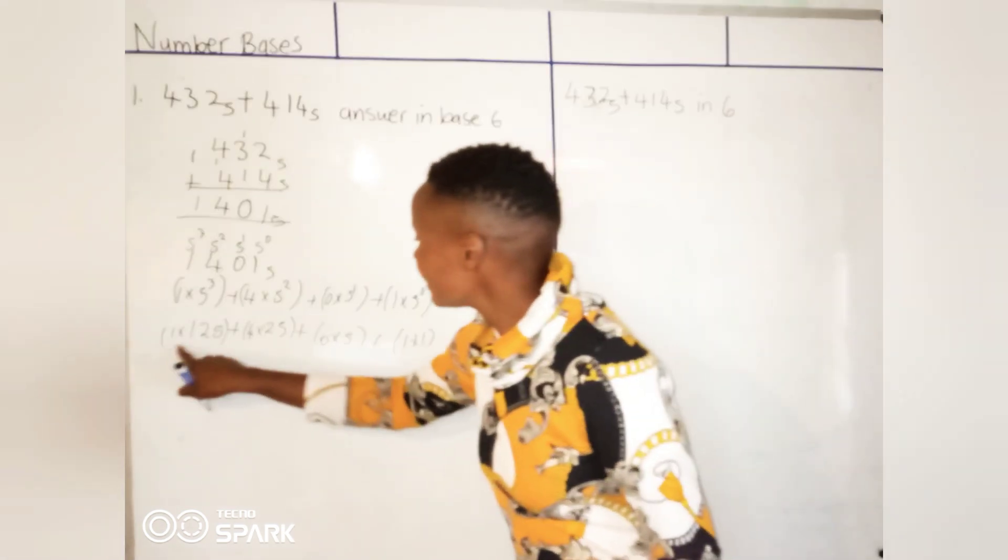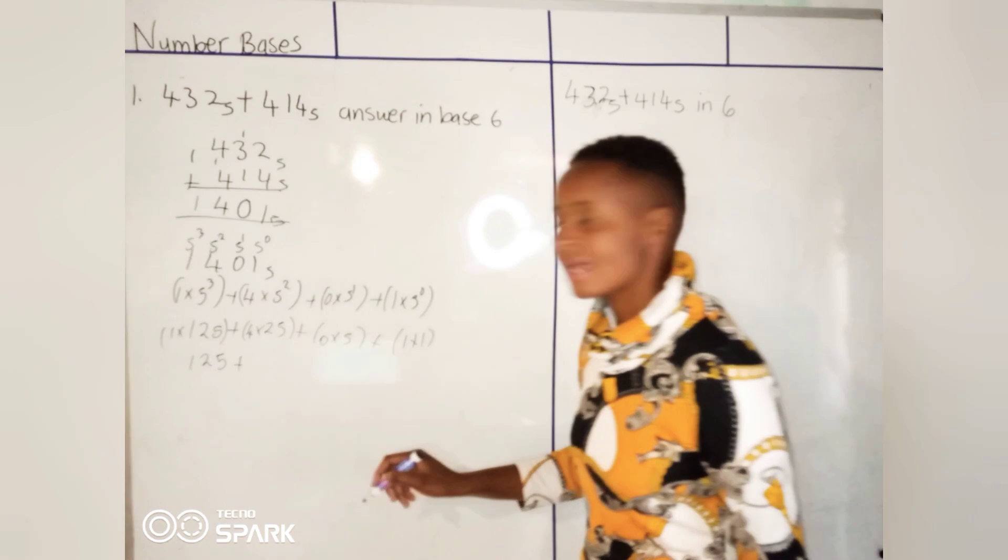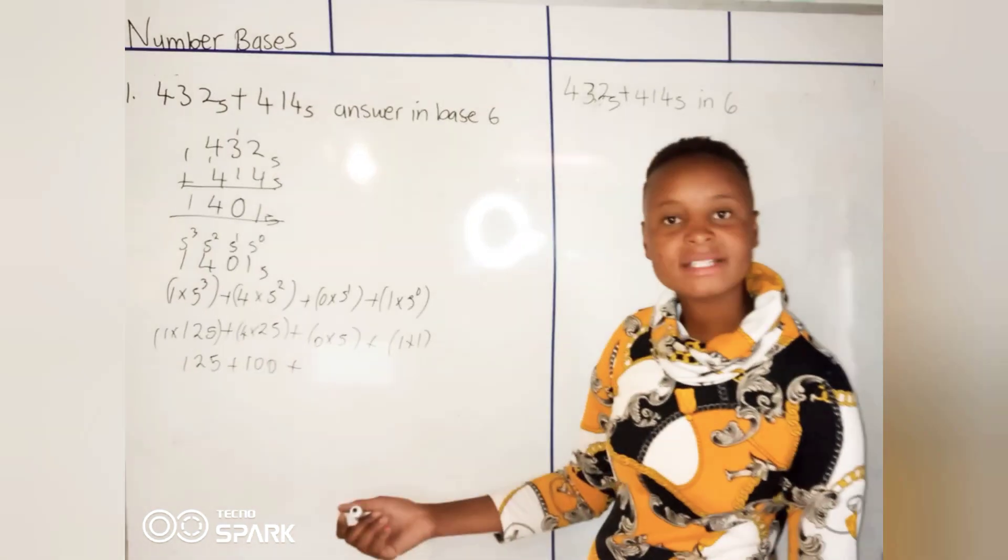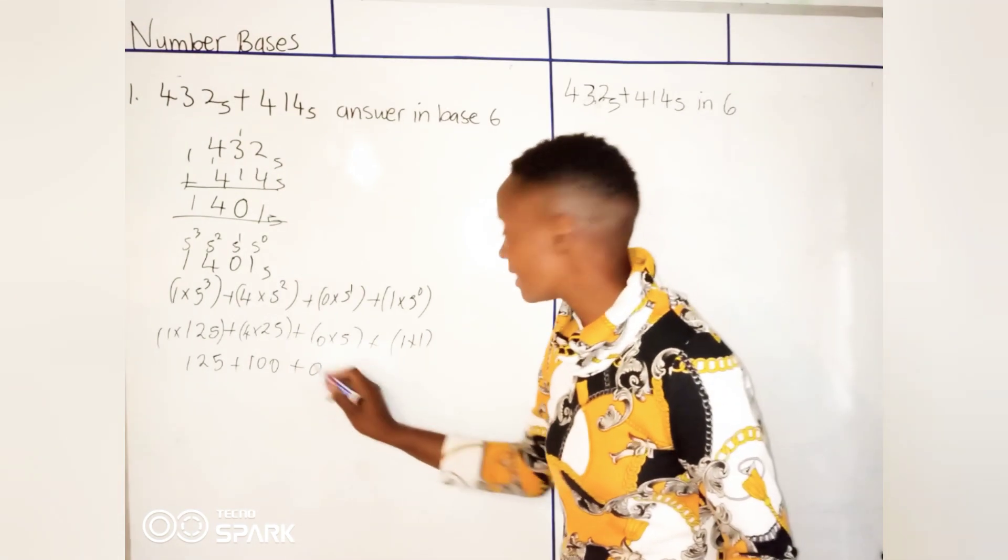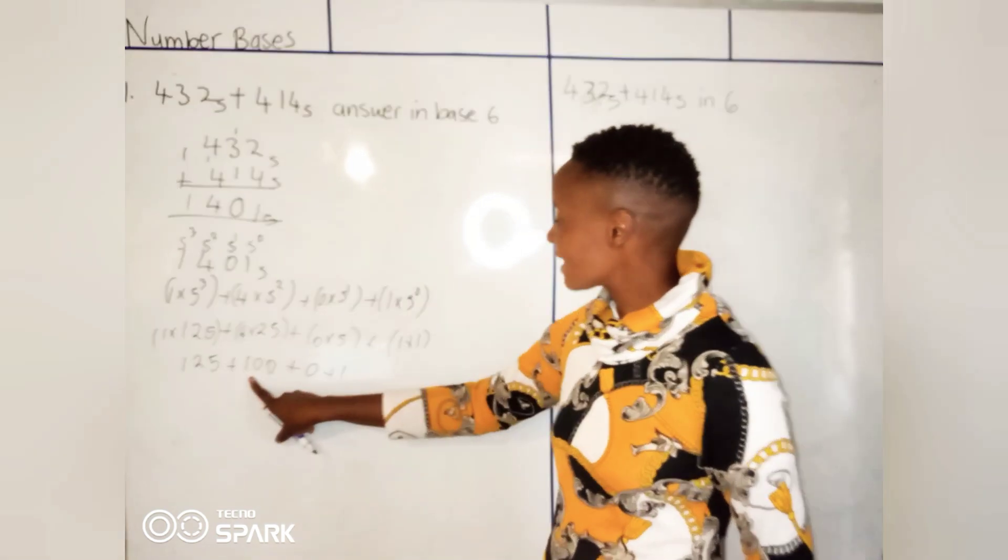So now let's simplify what's in our brackets now. 1 times 125 is just 125 plus 4 times 25 is 100 plus any number times 0 is 0. 1 times 1 is 1.